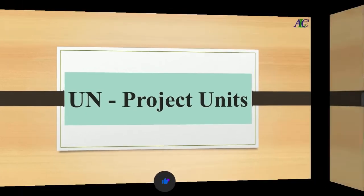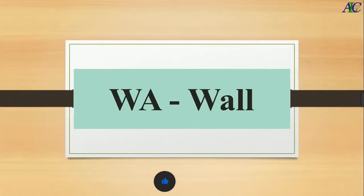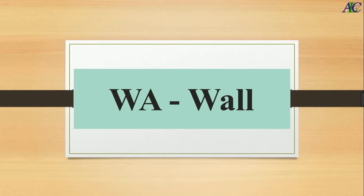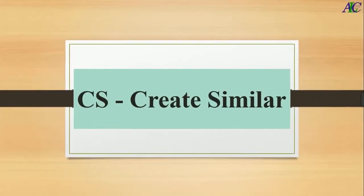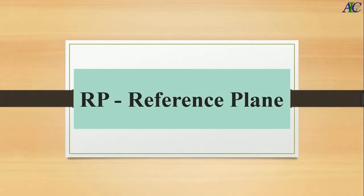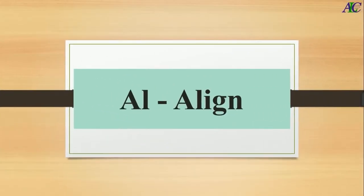WA is wall. C is create similar. RP is reference plan. AL is the shortcut key of align.